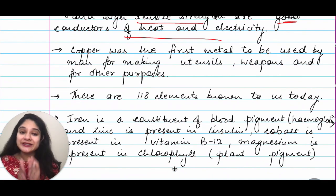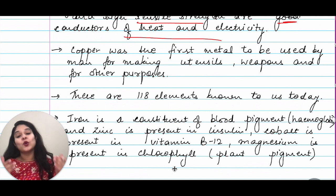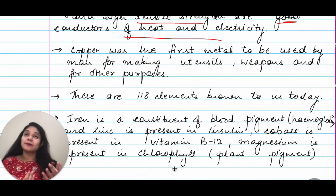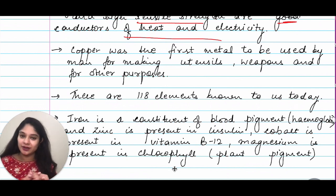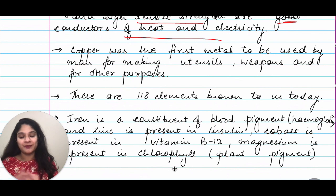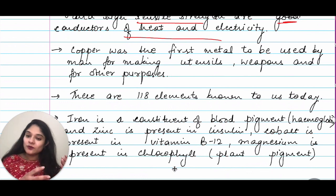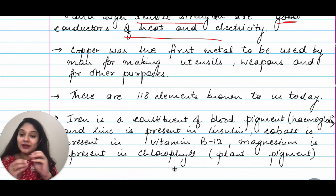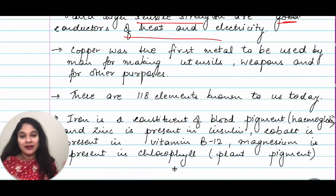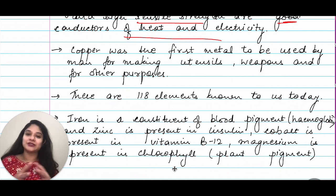Copper was the first metal to be used by man for making utensils, weapons, and other purposes. Why only copper? If you think about aluminum, aluminum is the most abundant metal found on earth — available in abundance. Then why not aluminum? The reason is that copper is easily available in its native or free state. Back in the days, people did not know how to extract aluminum — it was mixed with other compounds. Copper was just available as-is in the native or free state, so they could take it out and utilize it. Therefore, copper was the first metal used by man.